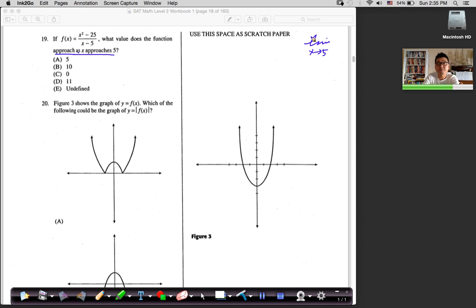They ask you this similar question over and over again, okay? So it didn't say, what is this value when x equal to 5? It says, what is it when it approaches 5?